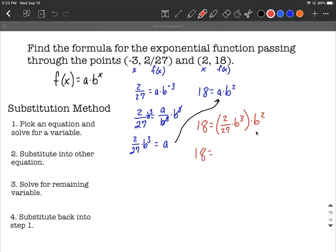First, I'm going to multiply b cubed times b squared. To combine those together, our rule is that we add the exponents. So three plus two makes five.